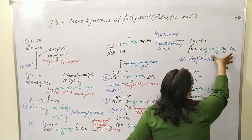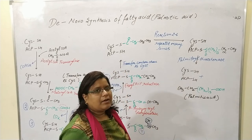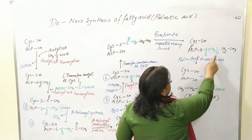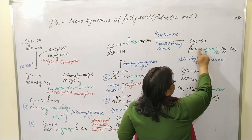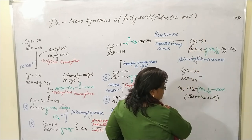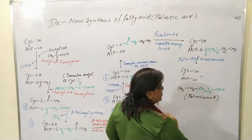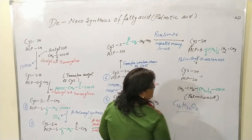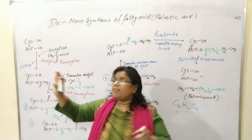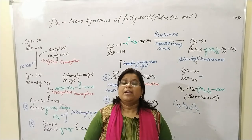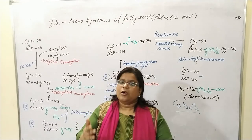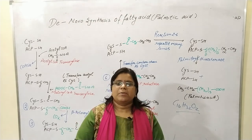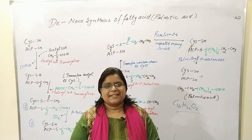Once the complete 16-carbon chain is assembled, palmitoyl thioesterase removes the carbon chain from the fatty acid synthase complex, releasing palmitic acid (C₁₆H₃₂O₂). This is how palmitic acid is synthesized using the multifunctional fatty acid synthase complex. I hope you enjoyed the lecture — if you have any doubts, please ask in the comment section, and please like, share, and subscribe. Thank you.